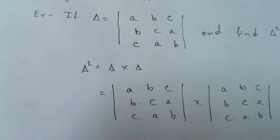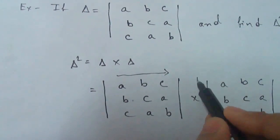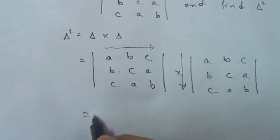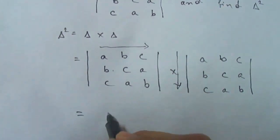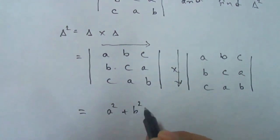Row by column method works like this. First we will take a row, then we will multiply it by the column. So a times a is a square, then b square plus c square.